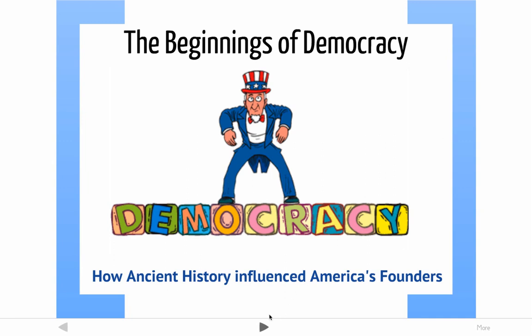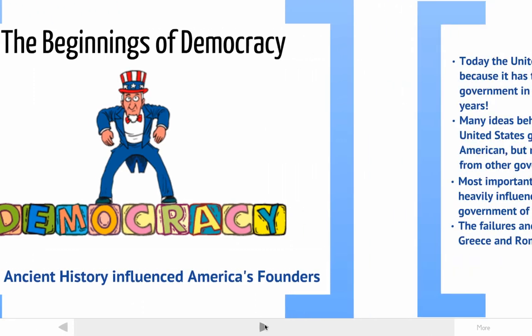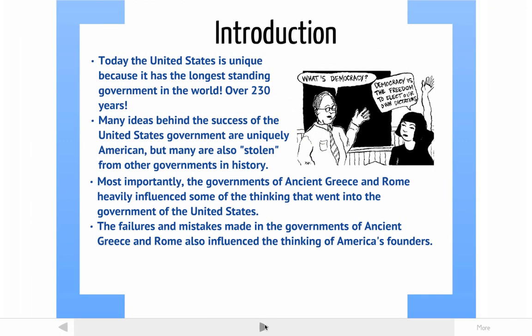This video is called The Beginnings of Democracy. We're going to be looking at ancient governments and ancient democracies — how those ancient democracies like Greece and Rome influenced the thinking of America's founders. We should celebrate a little bit because the United States is very unique. We have the longest government currently in existence in the world. Our Constitution has been the government of the United States for over 230 years, since 1788 when it was ratified. Today we're going to look at how some of the ideas that went into that Constitution came from other governments.